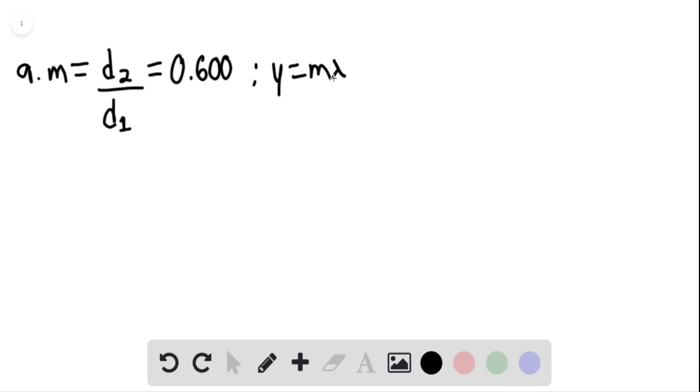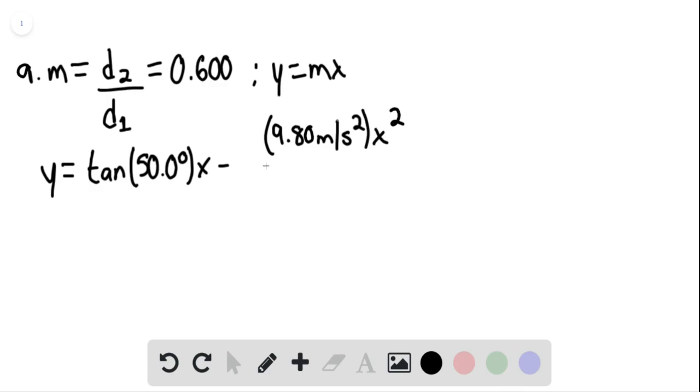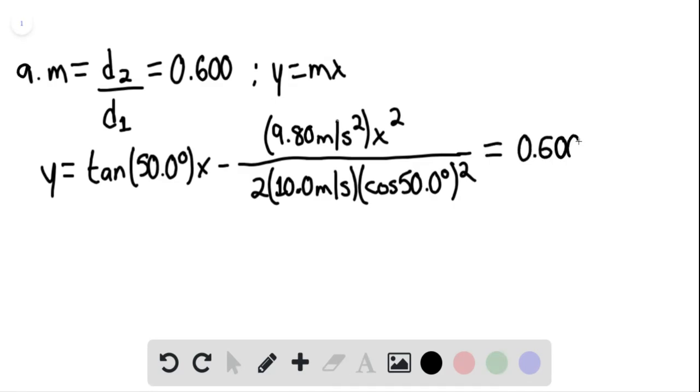So here, y equals mx, and we can choose our coordinate origin at the point of launch. We can say that y is going to be equal to tangent of 50.0 degrees multiplied by x, minus 9.80 meters per second squared multiplied by x squared, divided by 2 multiplied by 10.0 meters per second multiplied by cosine of 50.0 degrees quantity squared. And this is going to be equal to 0.600x.